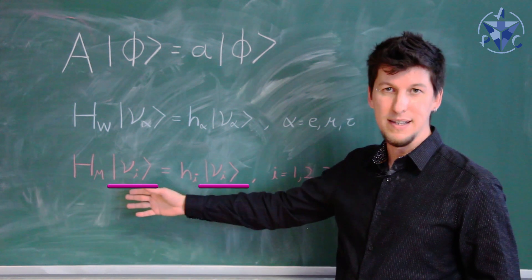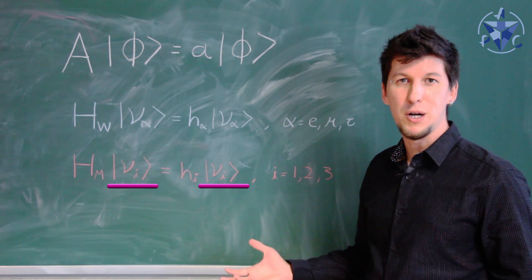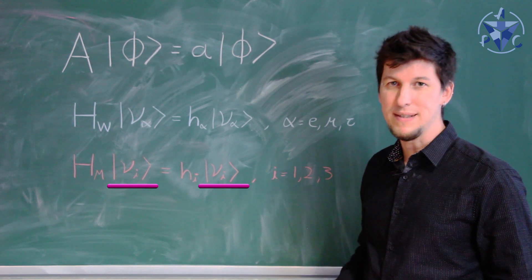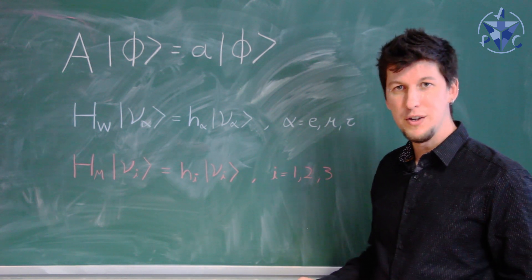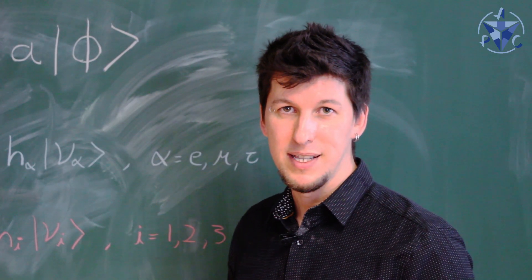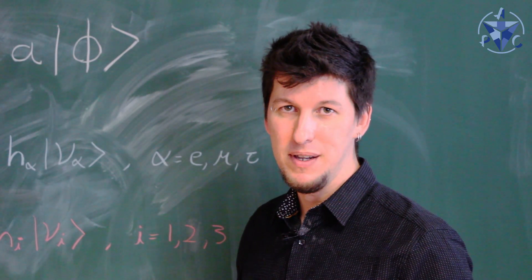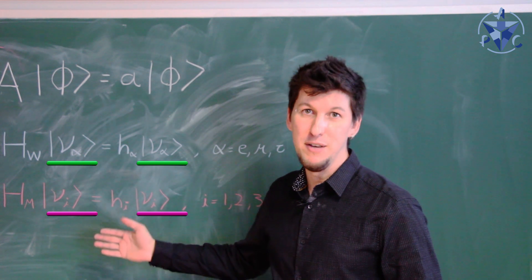The mass eigenstates are just the particles that have specific masses, and we just call them nu1, nu2, and nu3. The important point is that for neutrino oscillations to happen, these two eigenstates must be different.